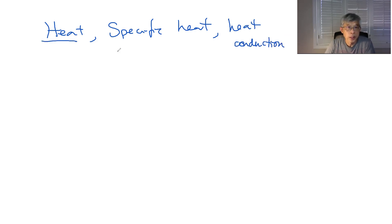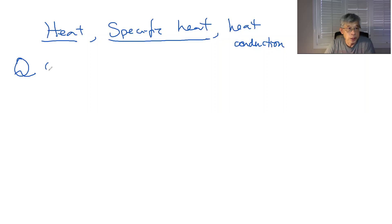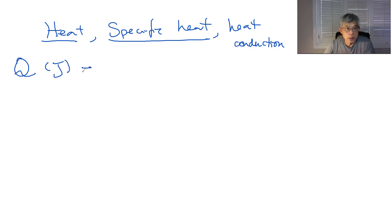So heat and specific heat. So heat, in symbol, is Q. And the unit is joule. So like energy — it's one kind of energy. So this is equal to the mass times C, which is specific heat, and times delta T.